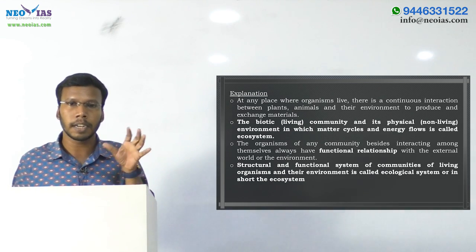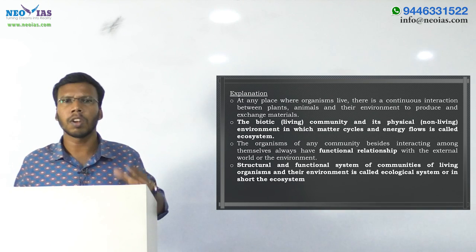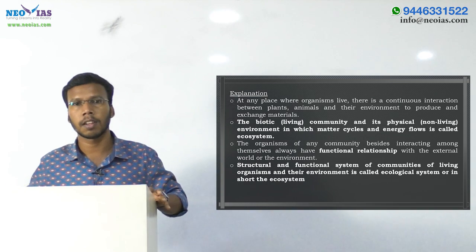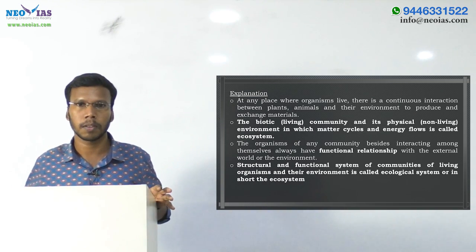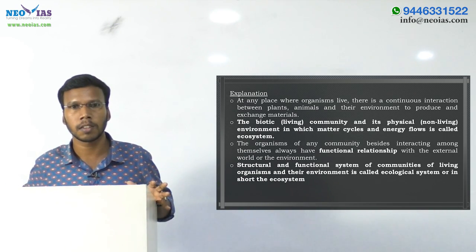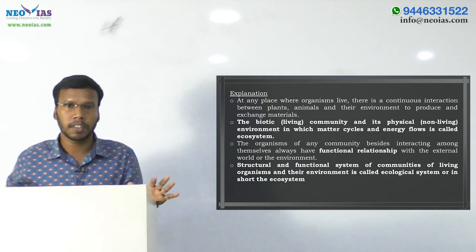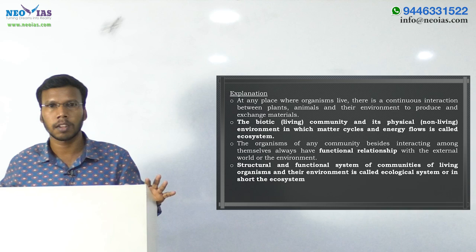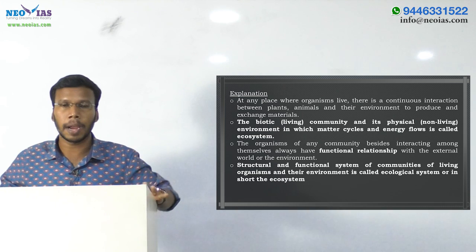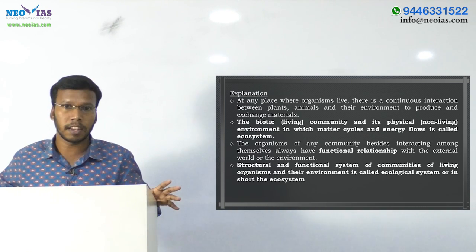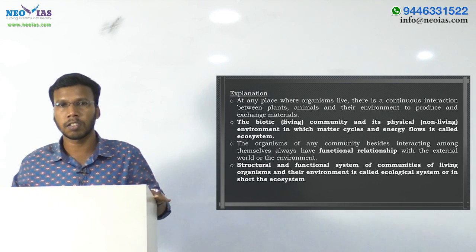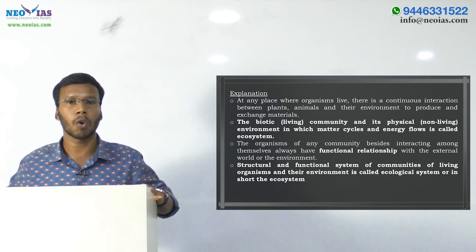Ecosystem is the interaction between living organisms and their environment. Living organisms are called biotic components, and the environment is called abiotic components — that means non-living components. The interaction of living organisms with the non-living components is called an ecosystem. So, the ecosystem can be defined as the biotic community and its physical environment, in which the matter cycles and energy flows.